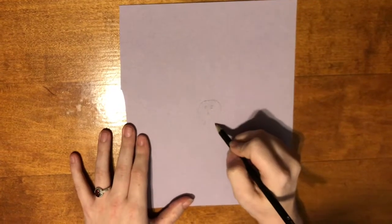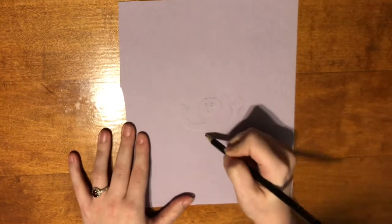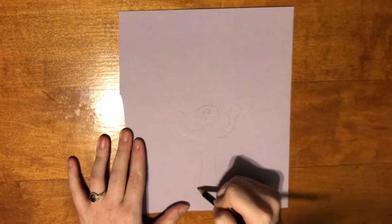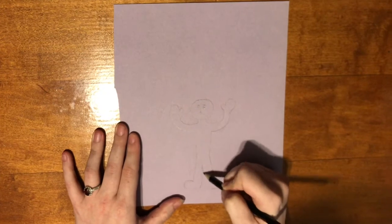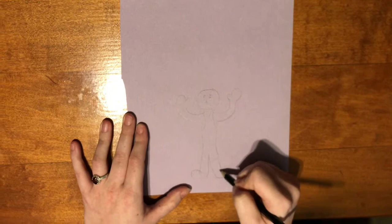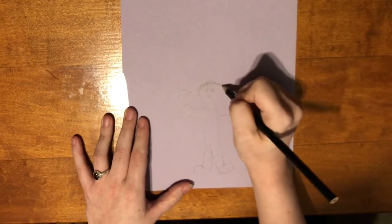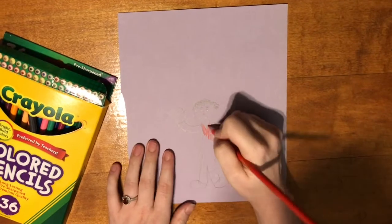Start by drawing your acrobat. Make sure its arms are outstretched to climb the string. Color and decorate them however you'd like.